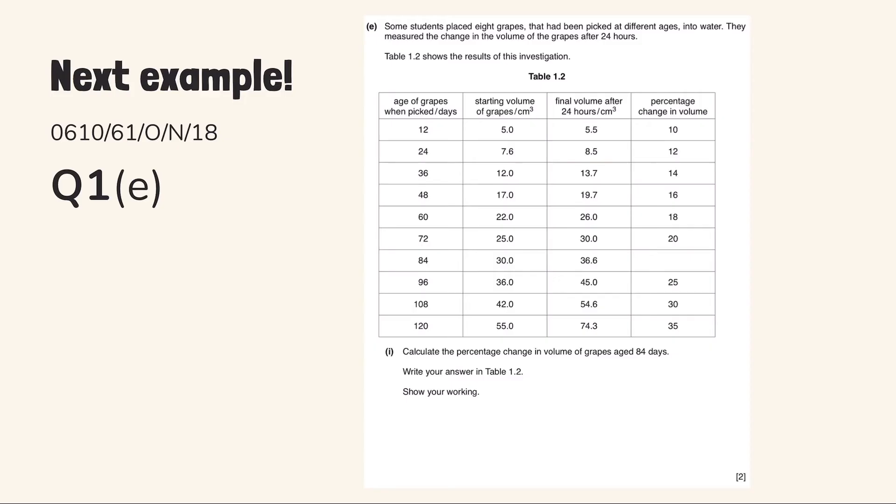Part 1 says calculate the percentage change in volume of grapes aged 84 days. Then write our answers in the table. We should subtract the final volume after 24 hours with the starting volume of grapes, then divide it by the starting volume, then multiply it by 100. So 36.6 minus 30 divided by 30, then multiply it by 100 to get 22%.